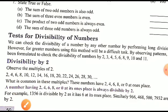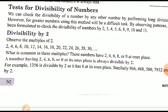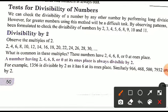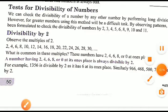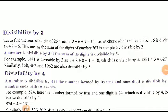Now we discuss the test for divisibility of numbers. Divisibility by 2: a number having 2, 4, 6, 8, or 0 at its ones place is always divisible by 2. This is the divisibility rule of 2.